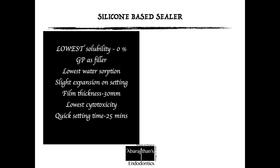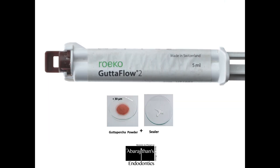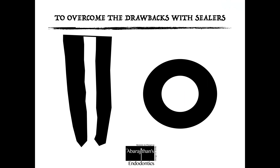There is also another class called silicone-based sealers, which have the lowest solubility. Some brands even incorporated gutta-percha as a filler. These are considered the first in class to slightly expand on setting, compared to the slight shrinkage of resin-based units. However, they are extremely hydrophobic with very poor wetting ability, which is why they did not become very popular. One example is GuttaFlow 2.